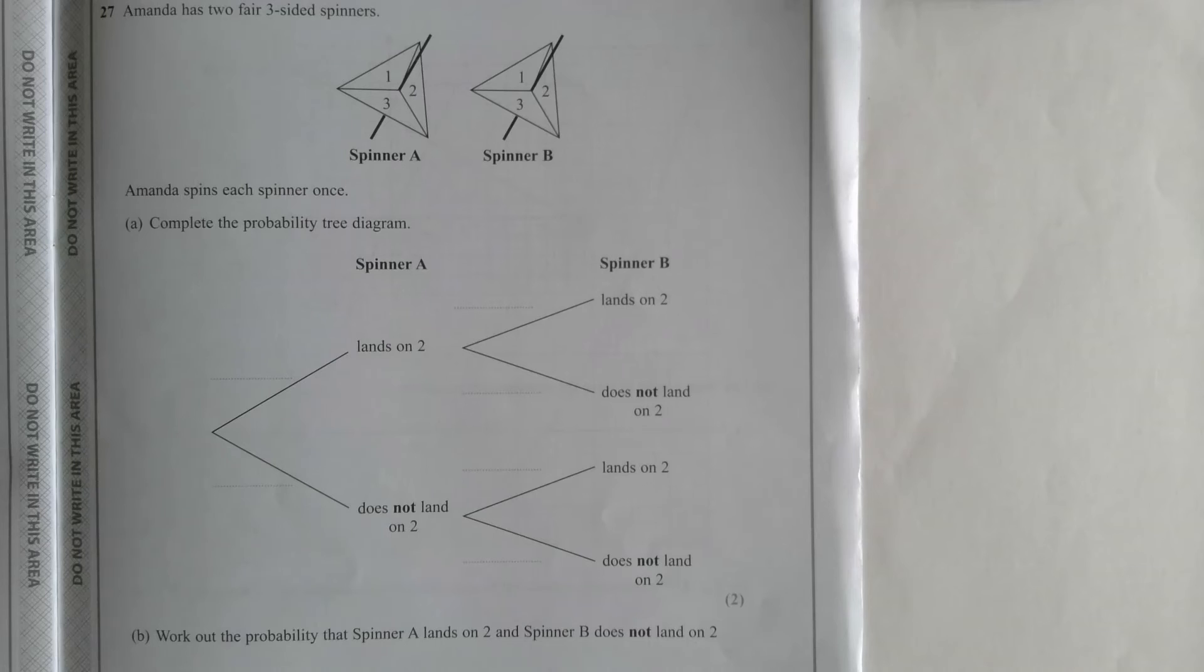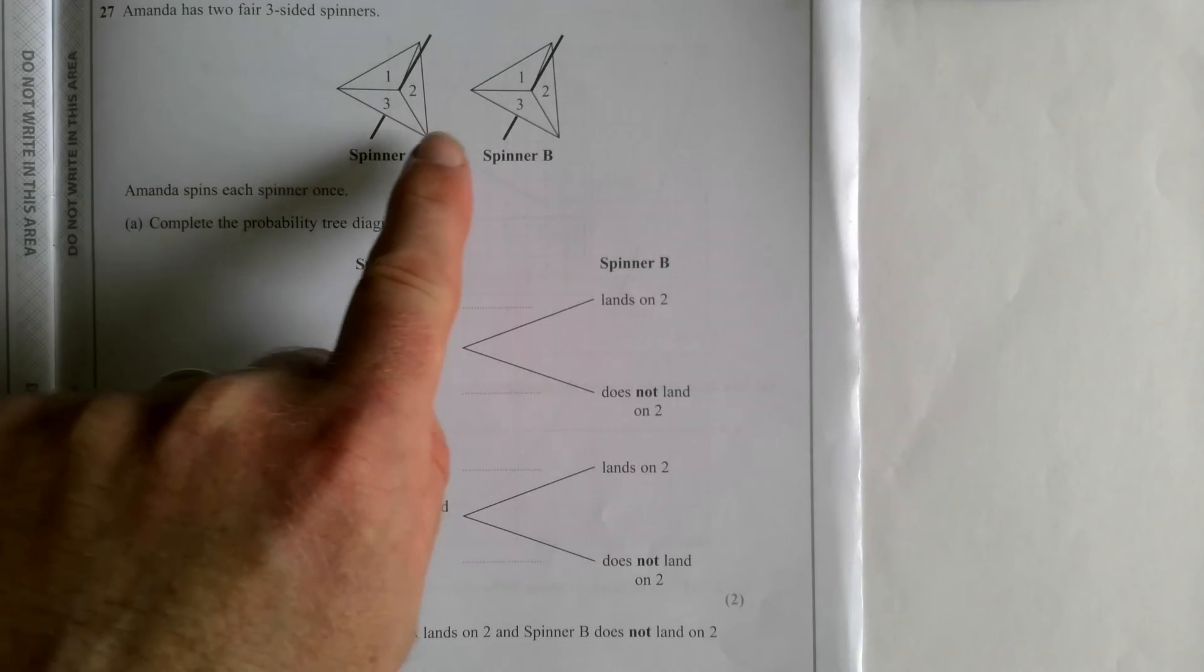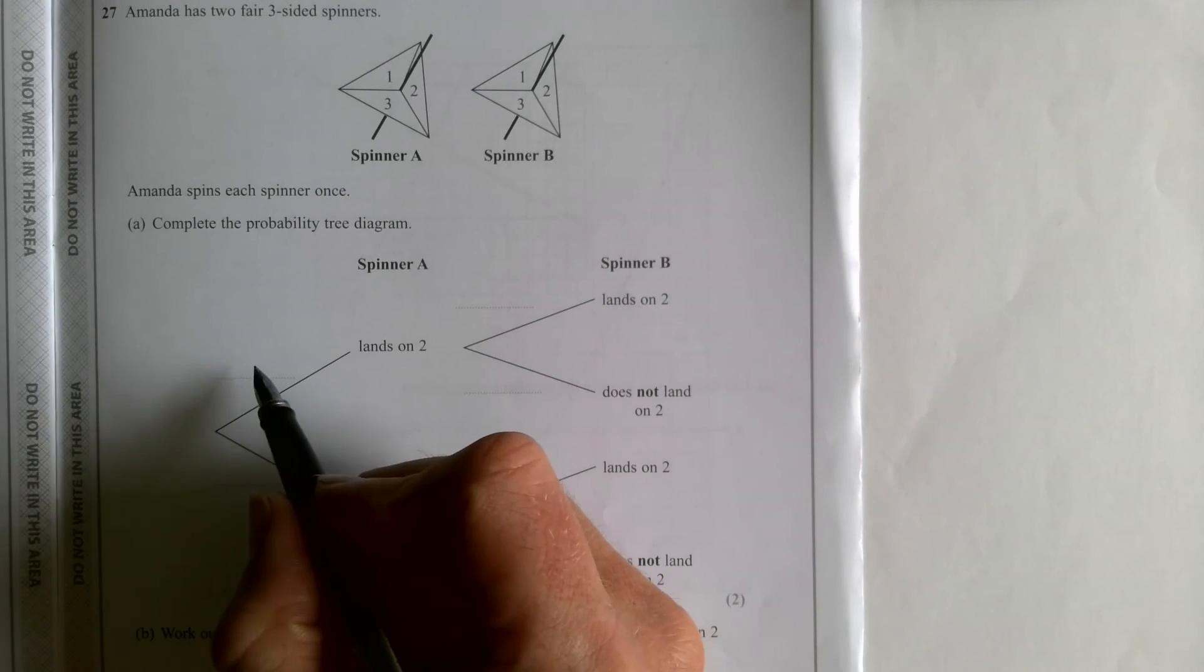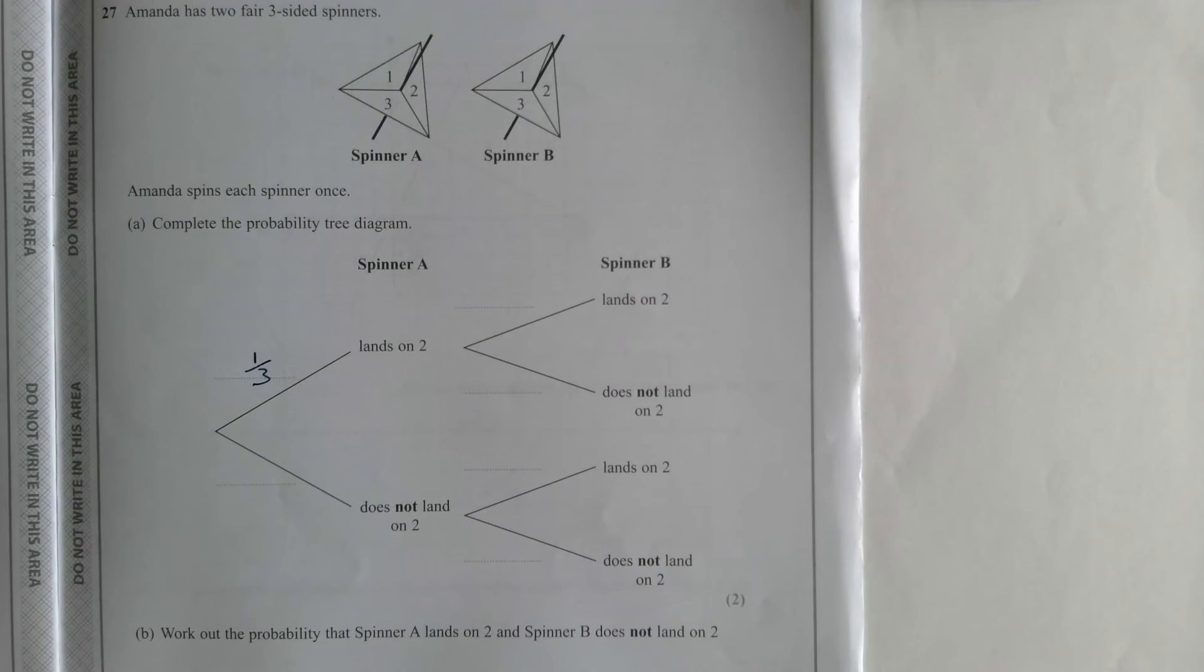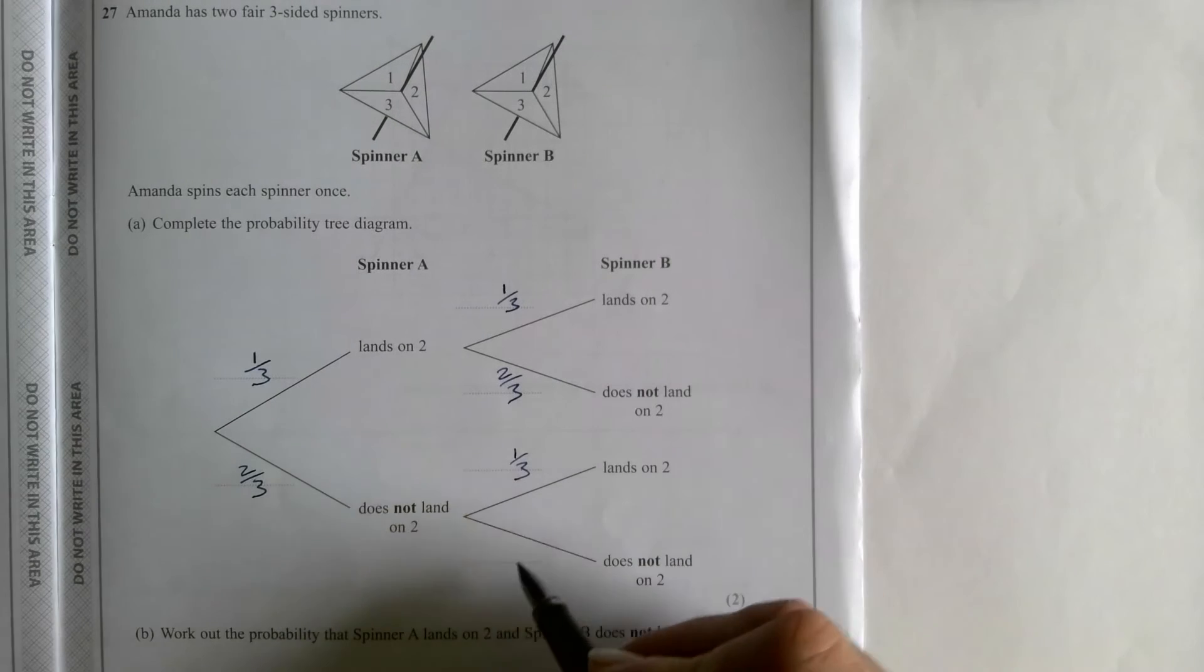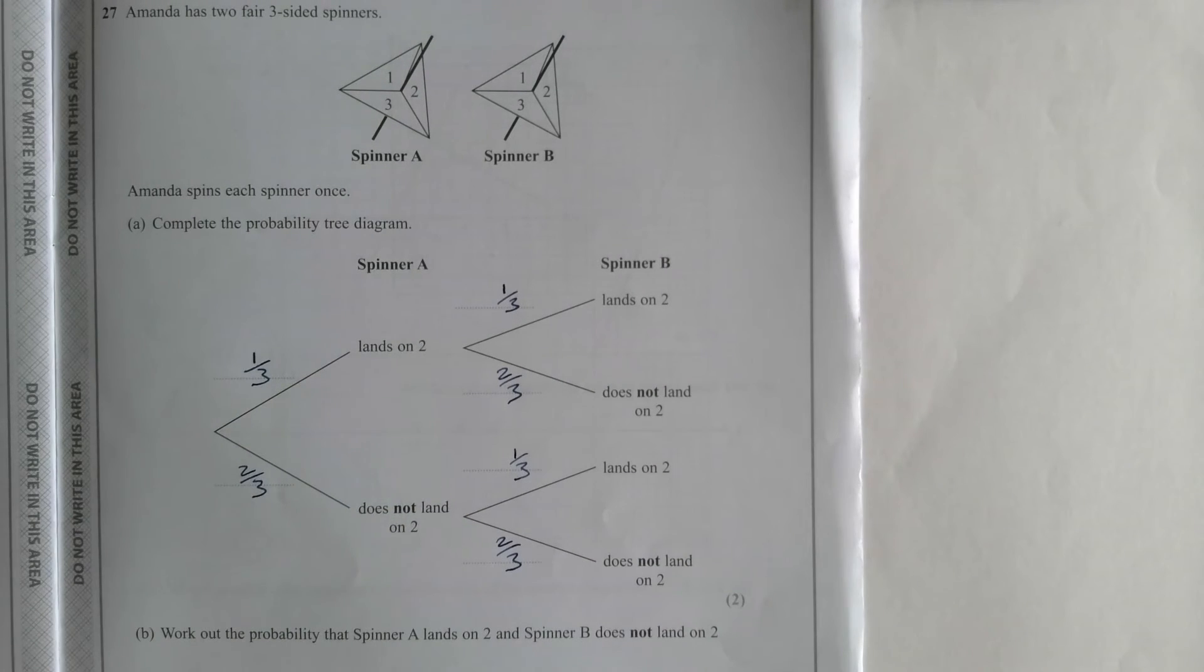Right, here's a sizeable probability tree diagram question. Four marks. I'll read it quickly in case you can't read it all. You've got two spinners with one, two, three on both of them. They're both fair-sided. Complete the probability tree diagram for whether or not it lands on a two or not on both spinners. And then work out the probability that spinner A lands on two, but spinner B does not. So it's a one in three chance that it lands on two and two thirds that it doesn't. And it's the same for spinner B. So for putting all of those in, you get two marks and you haven't worked anything out.